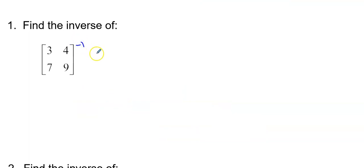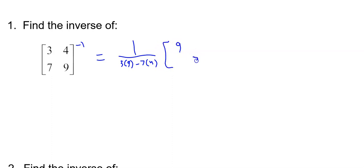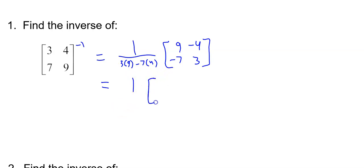Now find the inverse of [3, 7; 4, 9]. The inverse is 1 over the determinant — 3 times 9 minus 7 times 4 — which is 27 minus 28, that's just 1 over 1 — which is just 1. So 1 times anything is just the answer: the inverse is [9, negative 4; negative 7, 3].